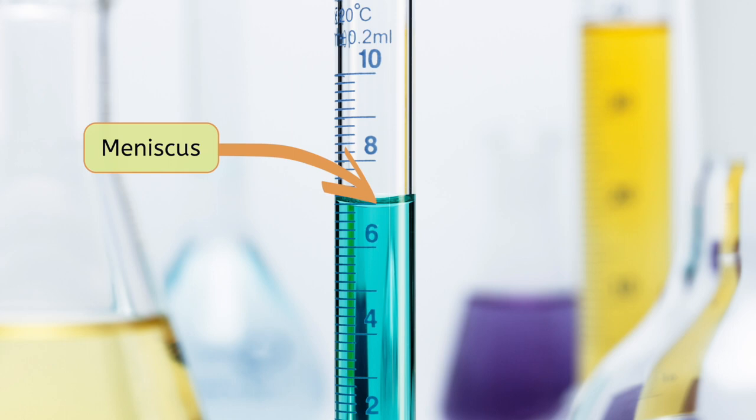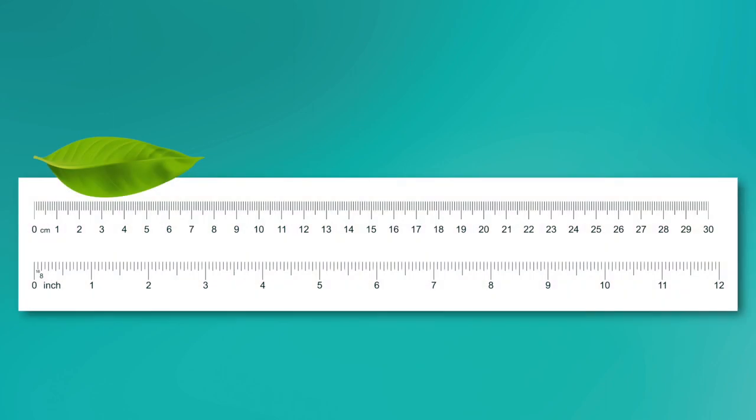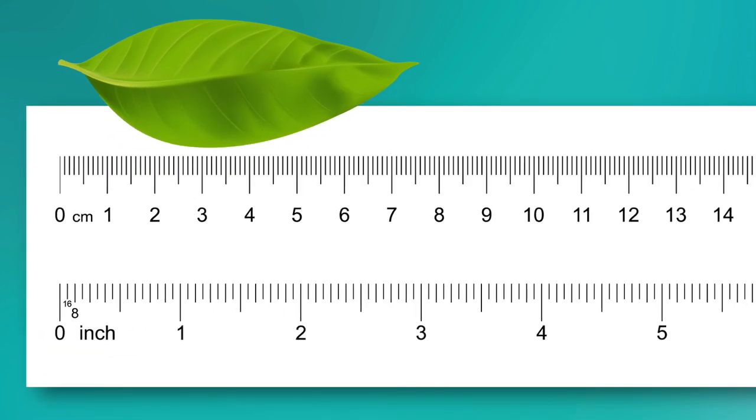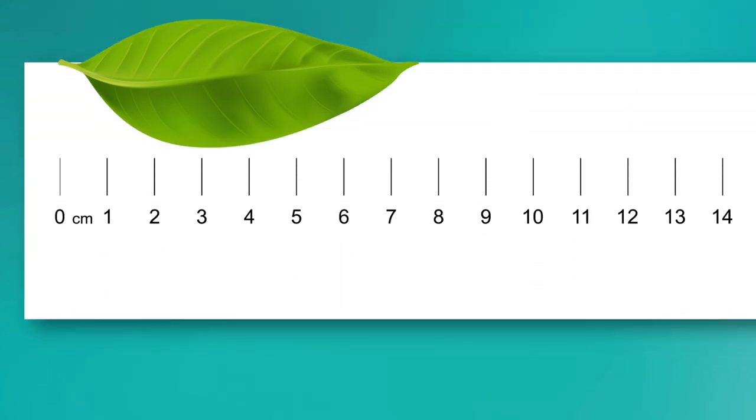It's also important to keep in mind that whenever you're measuring data, your measuring tools might not always measure your results perfectly. Sometimes measurements will fall in between measurement lines. In this case we make our best guess. This leaf's length is closer to 7.6 centimeters than 7.5 centimeters, so I'm going to say that this leaf is about 7.58 centimeters long. If my ruler instead looks like this, I'd have to round my guess to 7.6, which isn't as accurate.